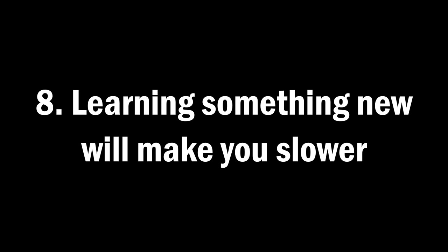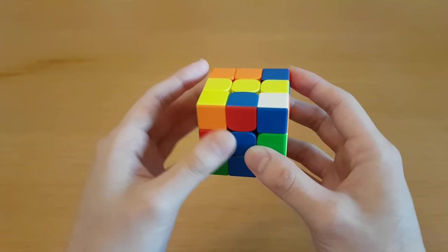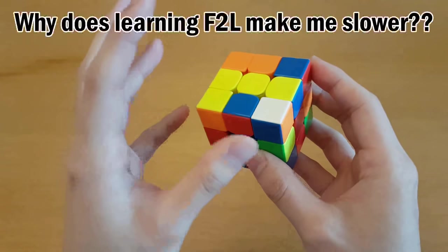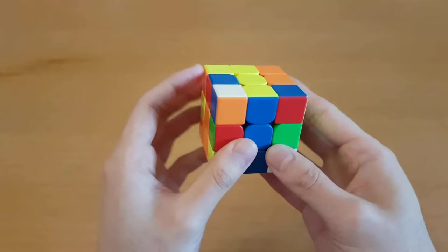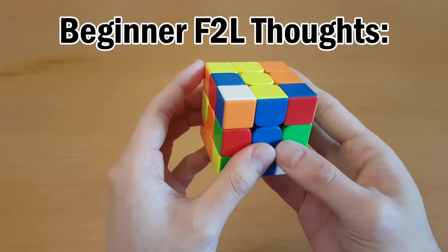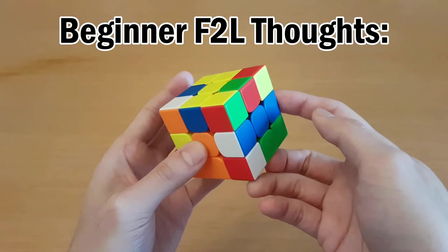Number eight, learning something new will make you slower and that is okay. This is a type of comment I get on my F2L videos all the time. Why does learning F2L make me slower? I just want to do my beginner method stuff one piece at a time. Well the thing with F2L is at first it feels like, put this at the specific spot and then move it that way and then get the corner on top of it, move it back and then solve this case which goes like that.